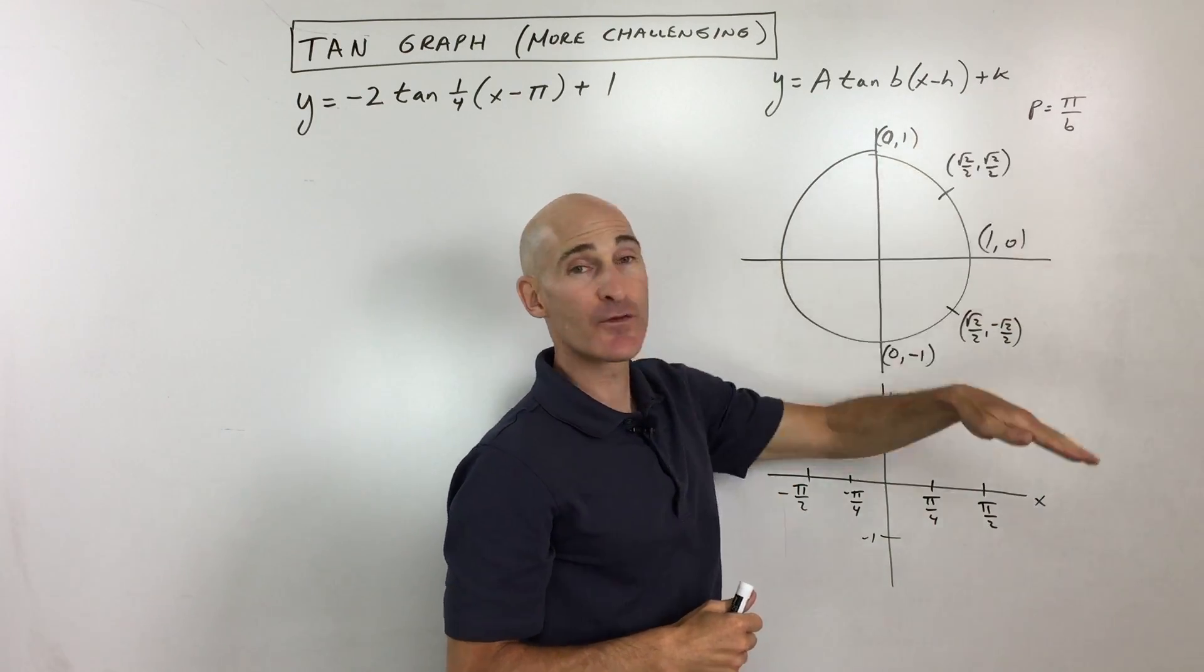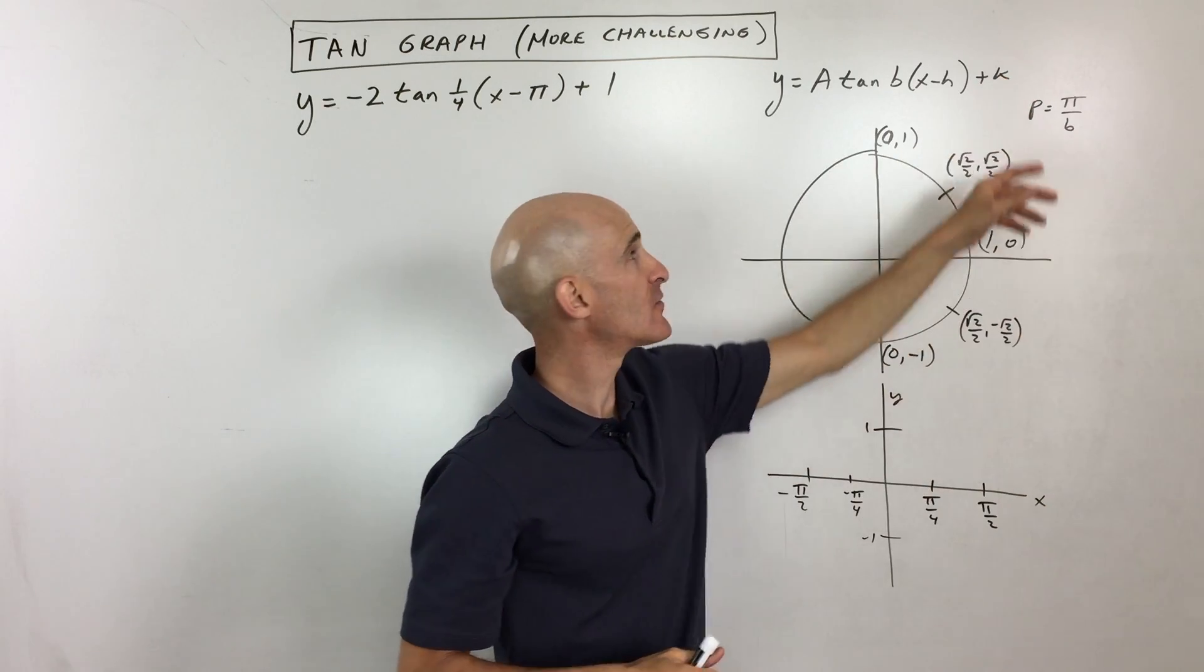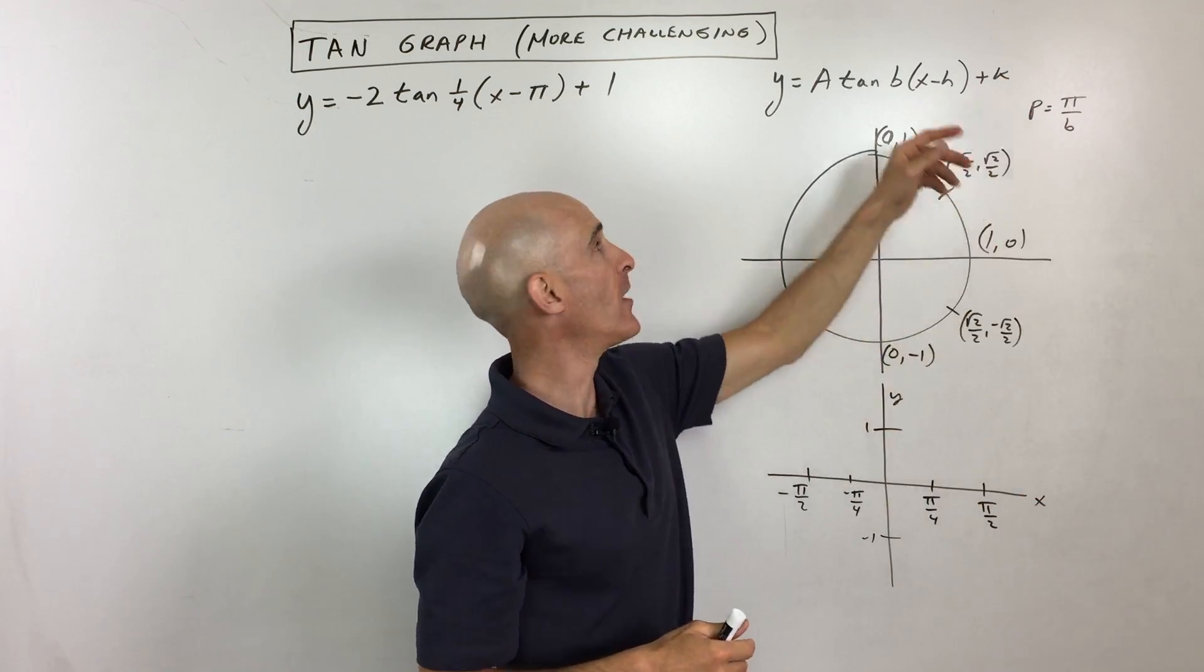And then the k is a vertical shift, so that's going to shift it up and down. So if this was plus 1, it would shift it up 1. Minus 1, it would shift it down 1.